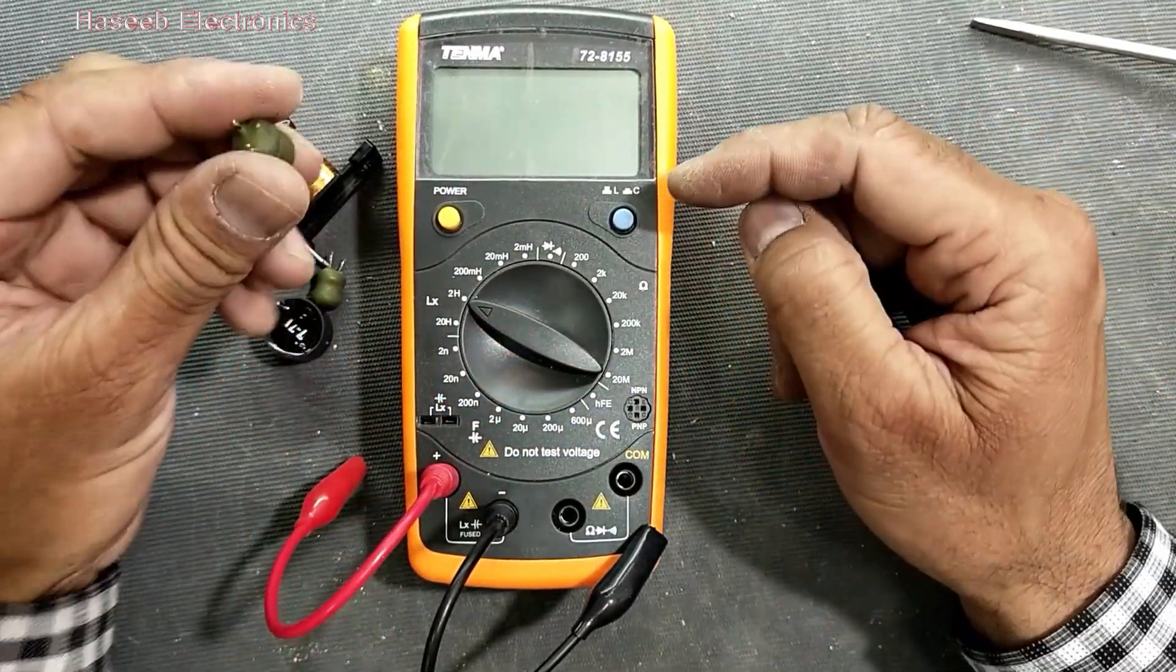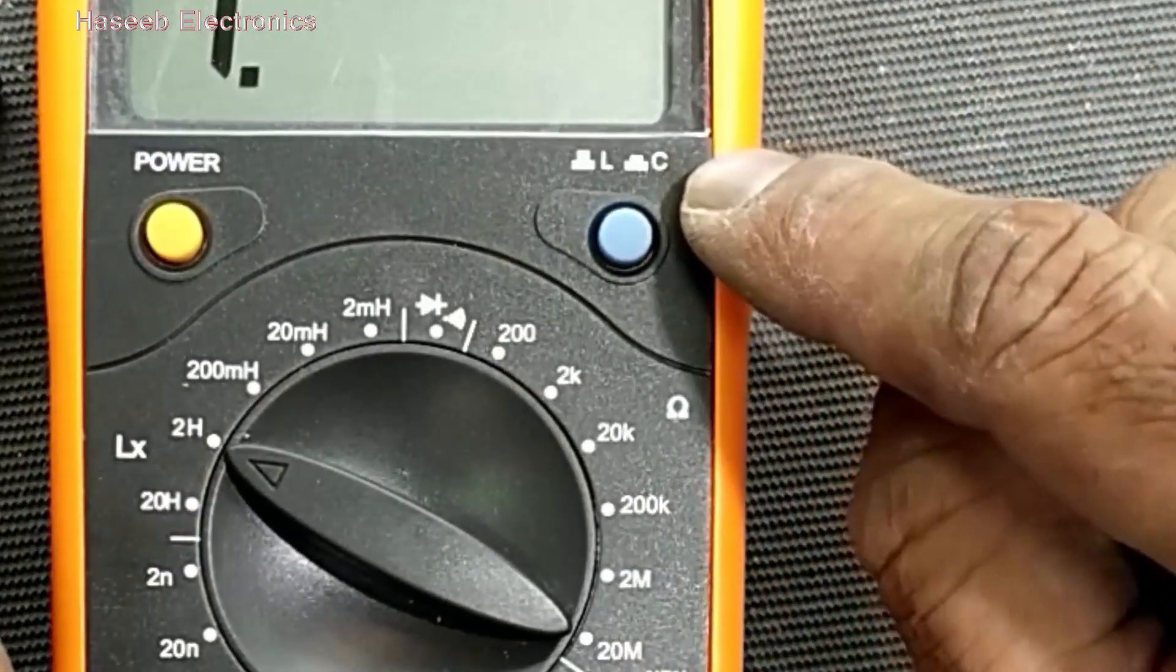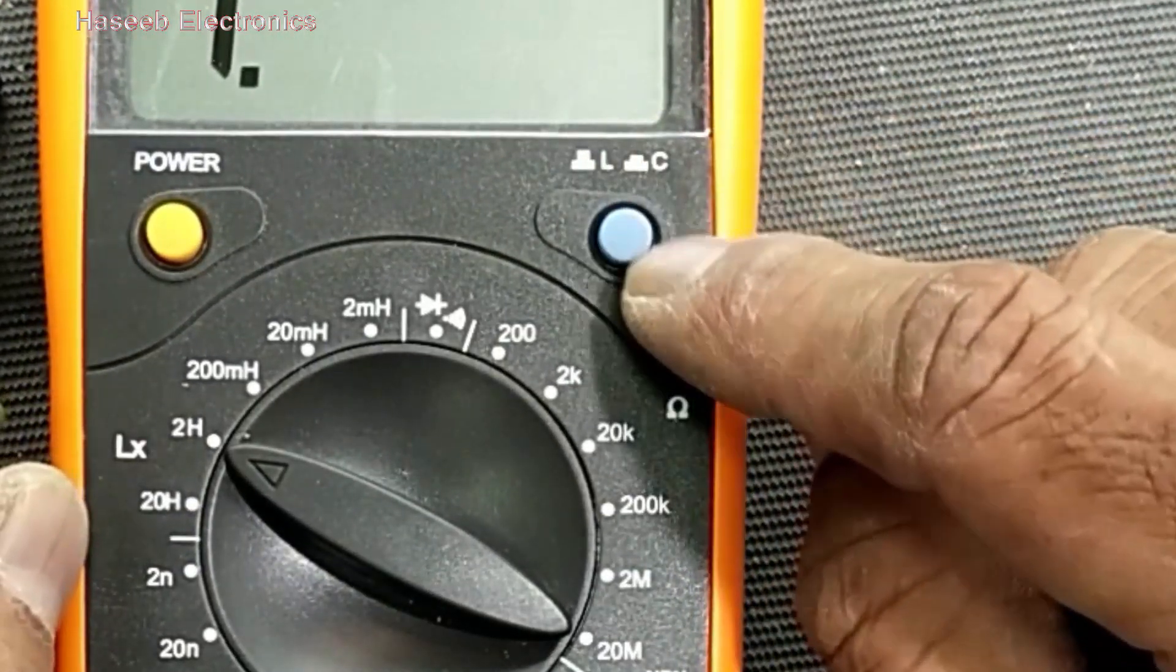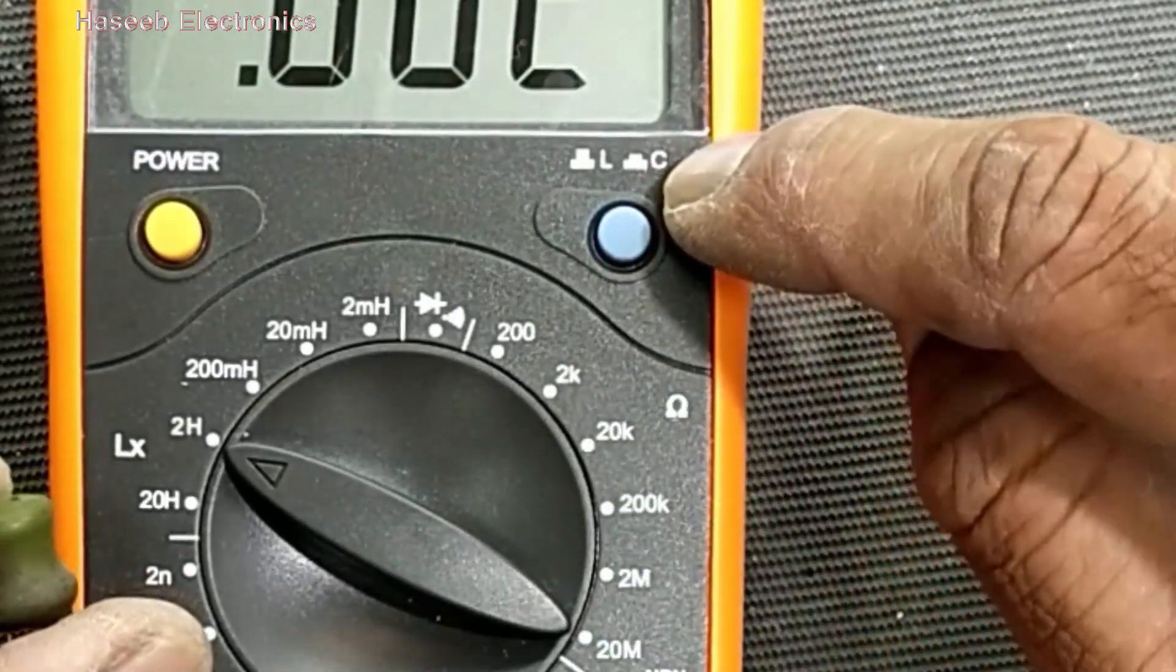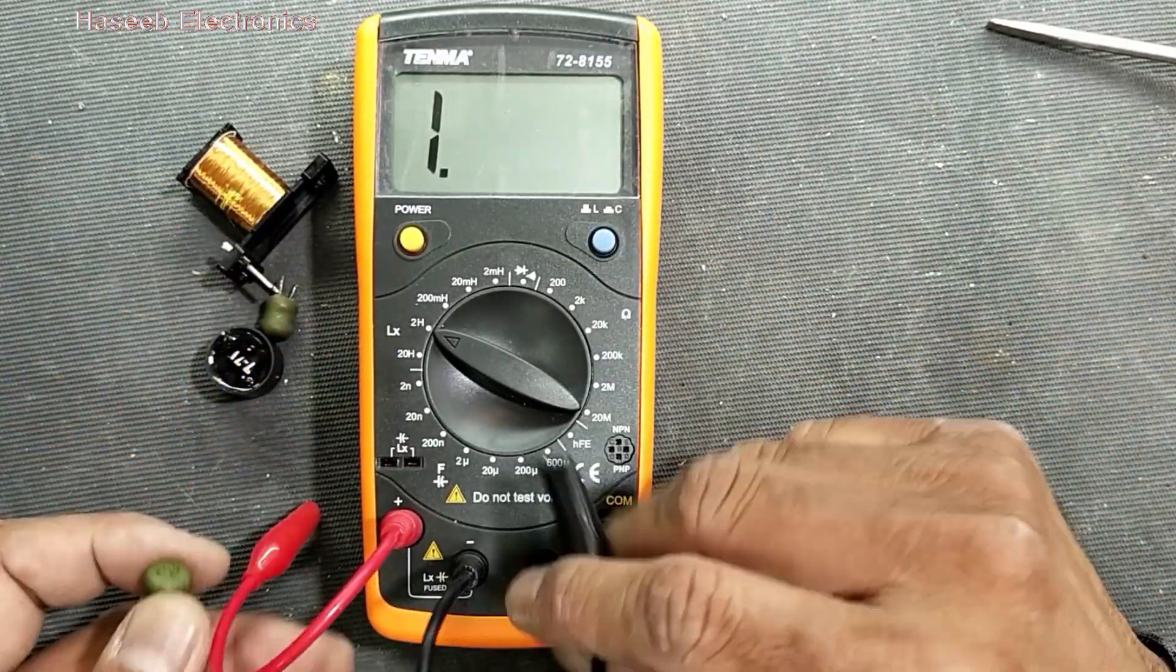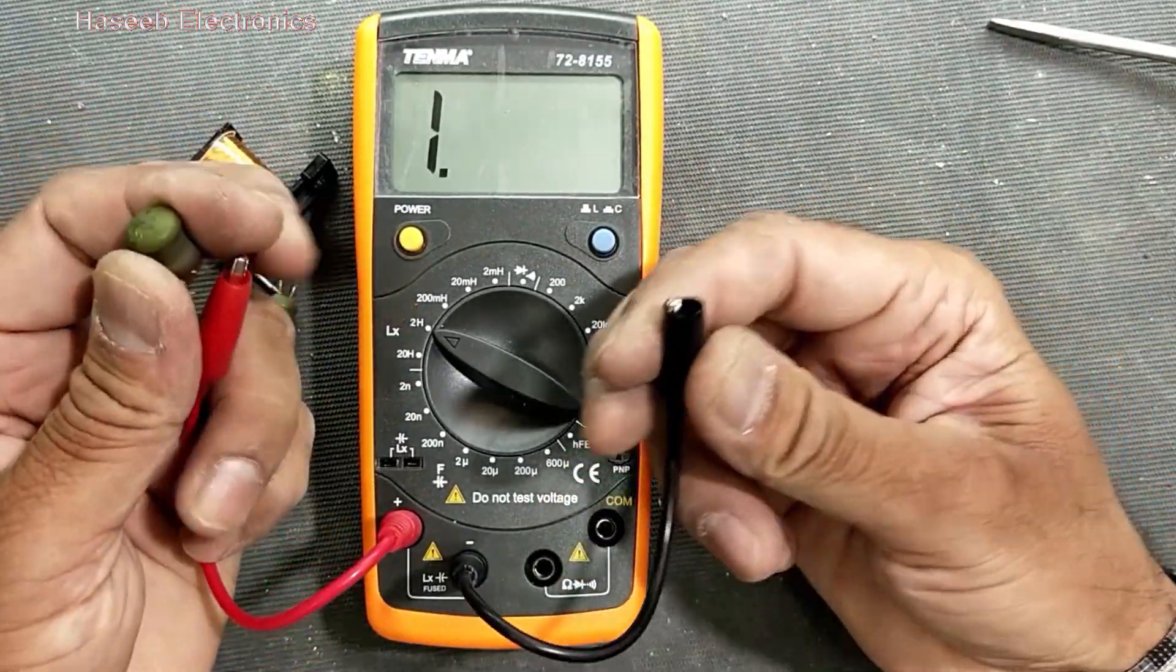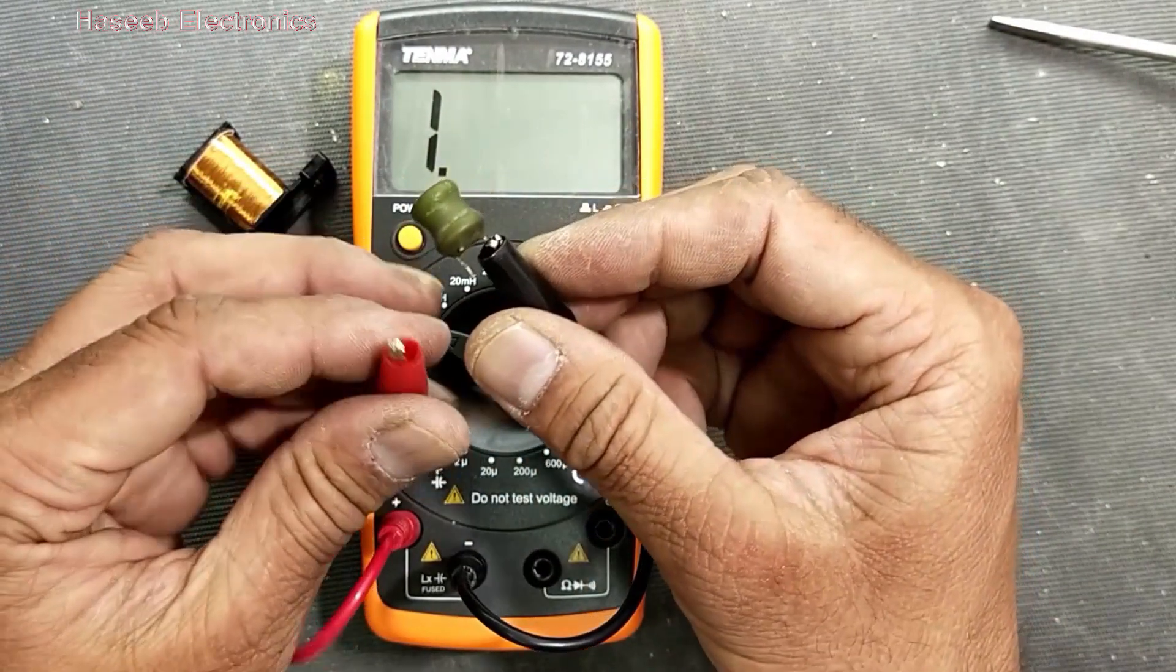We can test inductor. Power on. And this LC switch must be pressed out. If it is pressed in, so press in is for capacitor. Pressed out is for inductor. Now connect both leads to the inductor.